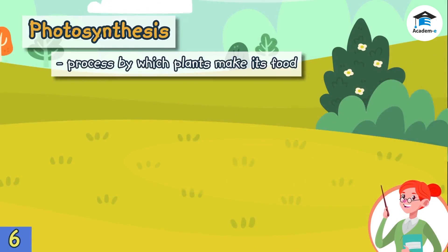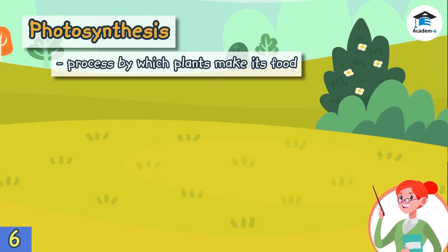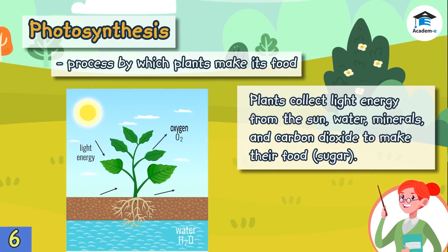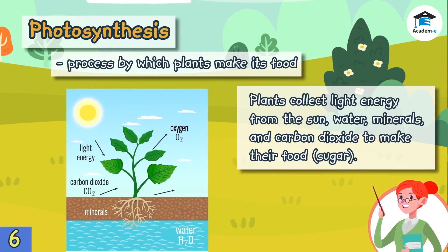Most plants are autotrophs, meaning they can make their own food through the process called photosynthesis. Photosynthesis is the process by which plants make their food. Plants collect light energy from the sun, water, minerals, and carbon dioxide to make their food.